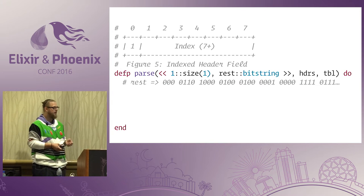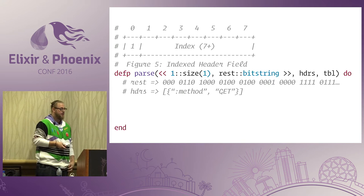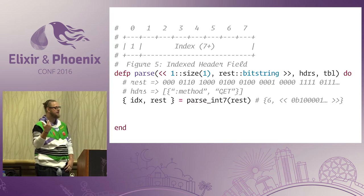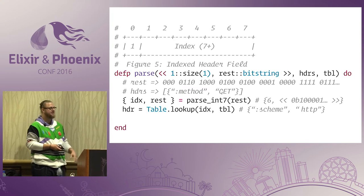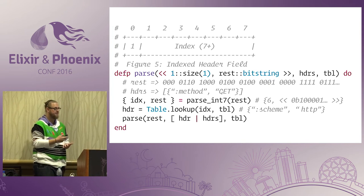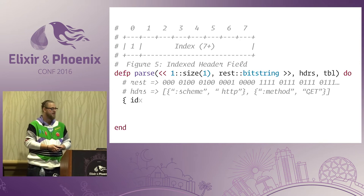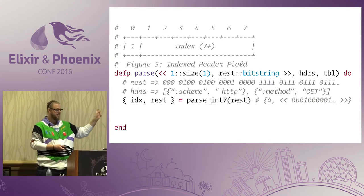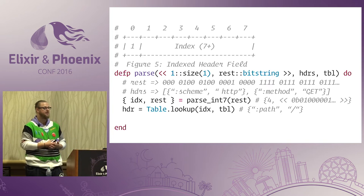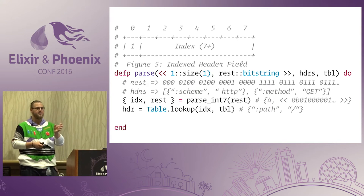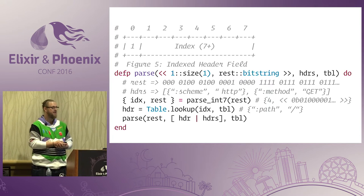Continuing the walkthrough: the same function matches again. This time it's index 6, which is scheme HTTPS, and we call parse again. Then again — index 4, which can be path slash from the table. We append it and call parse again.